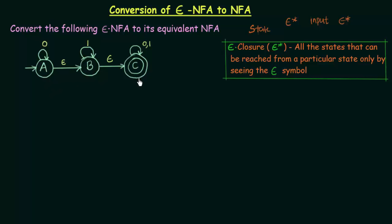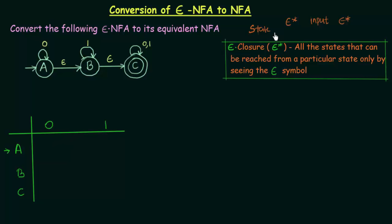In order to convert this to its equivalent NFA, let us first draw the transition table for the NFA we will be creating. We have states A — where A is the starting state — B, and C. The inputs we have are 0 and 1. Now let us follow this procedure and fill up this table.